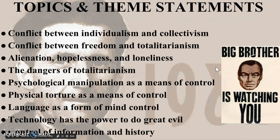The topics and themes include conflict — because it's dystopian — individual versus society, individual versus the community, and conflict between freedom and totalitarianism. There are also feelings of alienation, hopelessness, and loneliness, which are very prominent in 1984 because characters are not allowed to have friendships — they should only be dedicated to the Party. And then there's the dangers of totalitarianism: when you give someone too much power, they want more and they're never going to be satisfied.